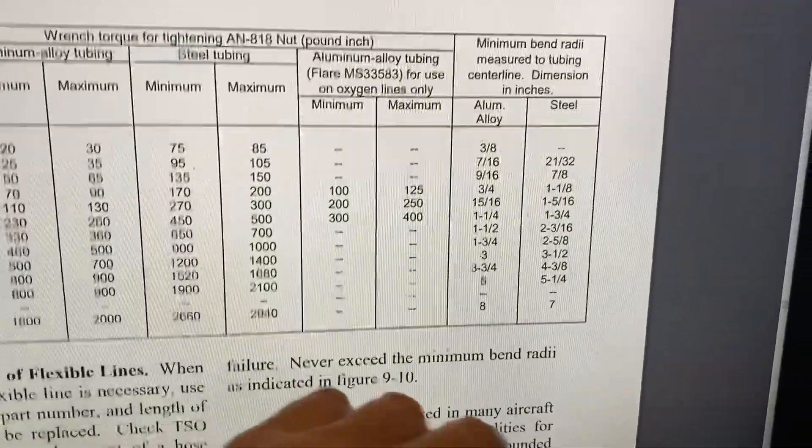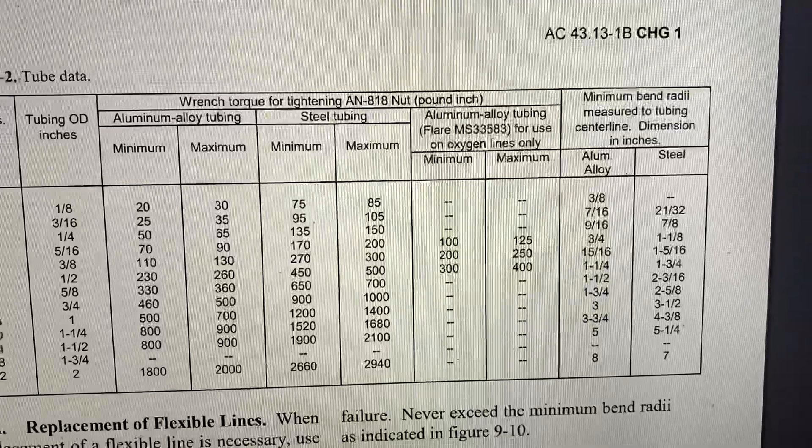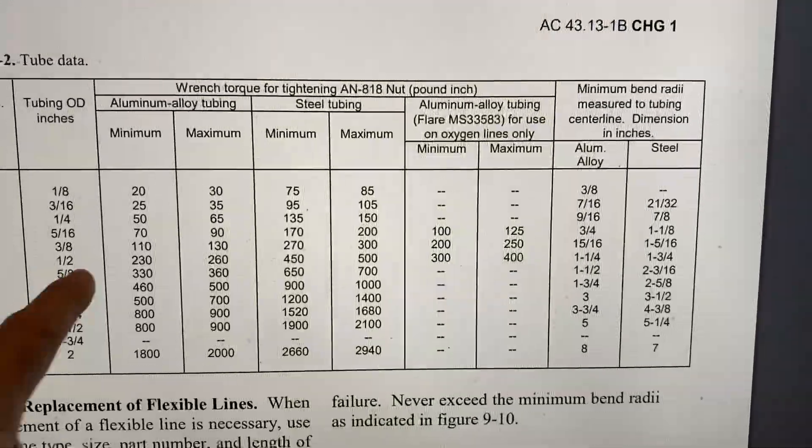So the bend radius is always going to be greater so that way the bend stays more gradual. It's not as sharp as a bend.